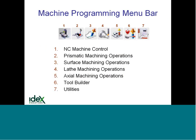The menu bar is divided up into categories. Starting from the left-hand side: the NC machine control icon, then prismatic operations, surface machining operations — which doesn't separate between three-axis, four-axis, and five-axis, it's just surface machining for however many axes you have — then turning operations labeled as number four, all the axial operations, and then a tool builder to build tools, tool holders, and tool assemblies.